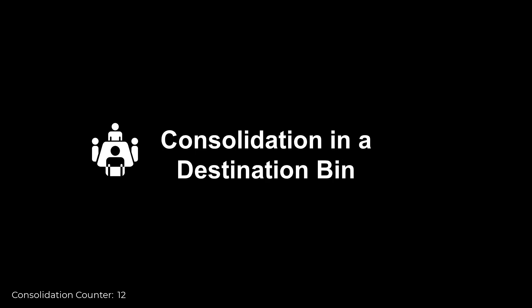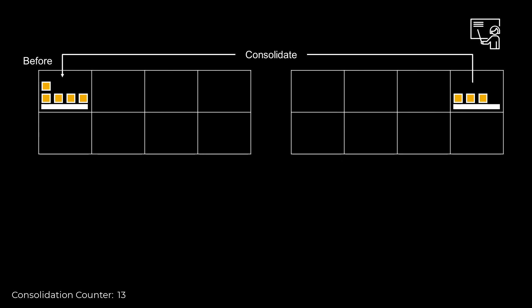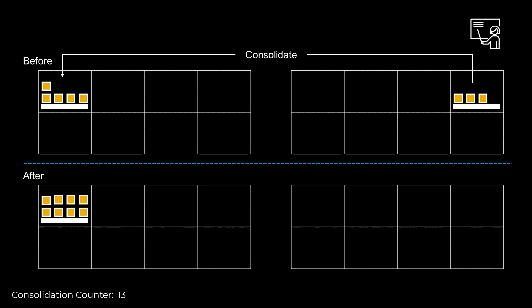This video will run through examples of consolidation in the destination bin and consolidation at a work center. We will begin by showing consolidation in the destination bin. Our first product is stored across two storage bins, five and three units in each bin. A full pallet consists of eight units, so it will make perfect sense to consolidate the two quantities together. After consolidation, we have freed up one storage bin and have a full pallet with eight units in one location only.